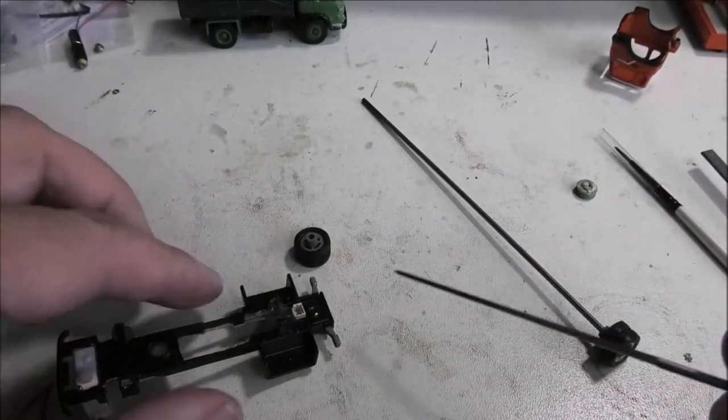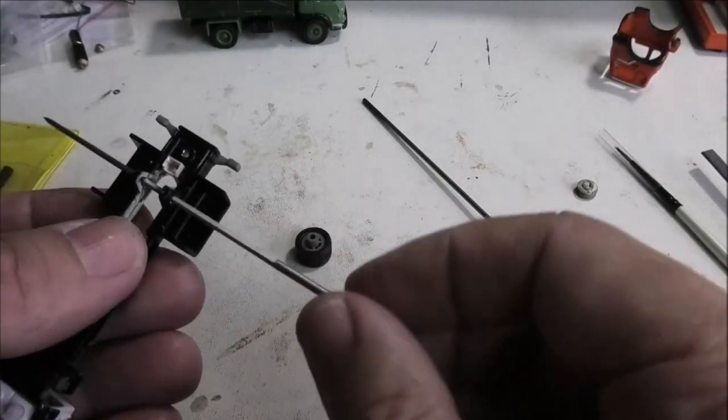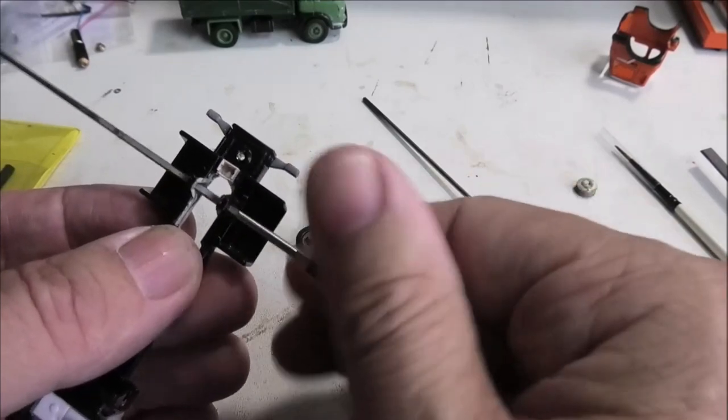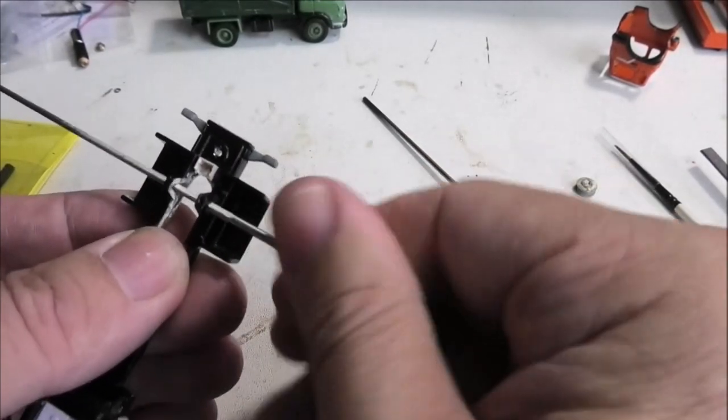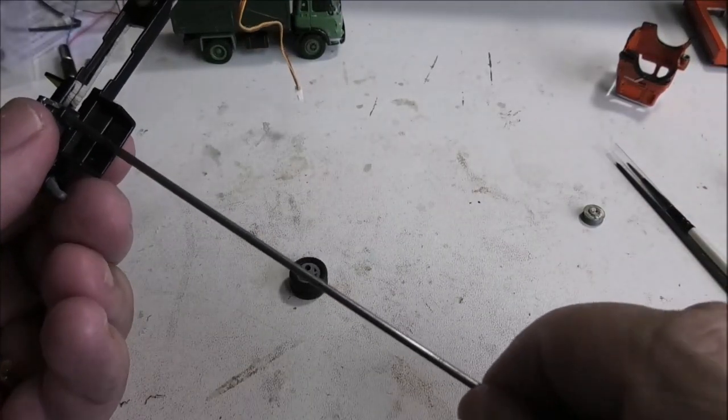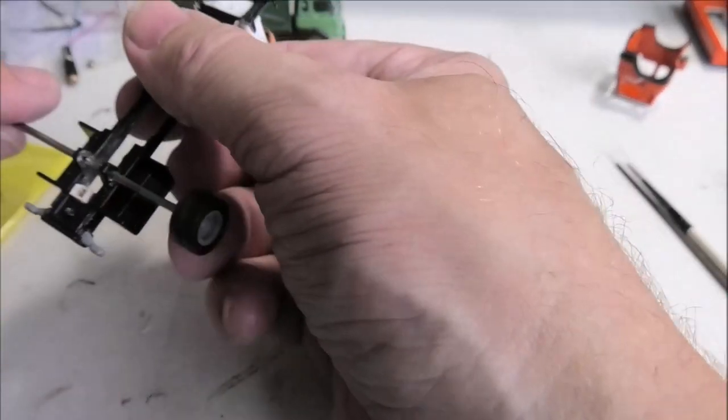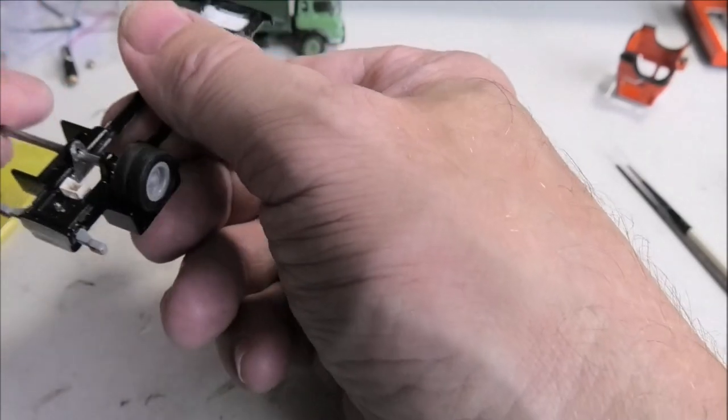Now using a broach reamer or drill we open out the rear axle holes in the chassis to two millimeters for the new axle to make sure it rotates. The rear axle holes freely but without undue slop, we don't want it rattling around in there.